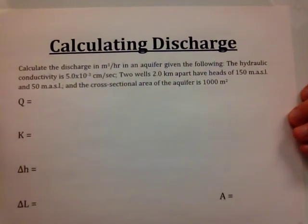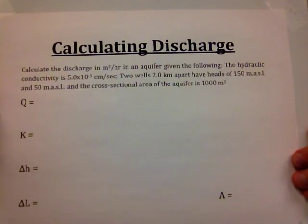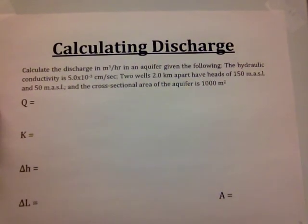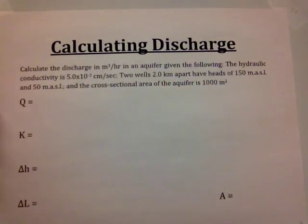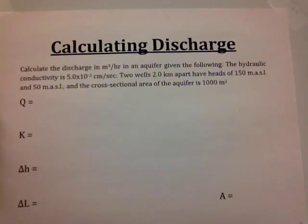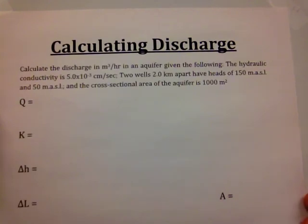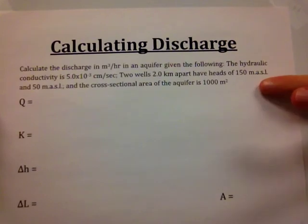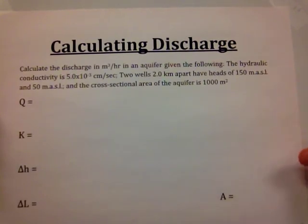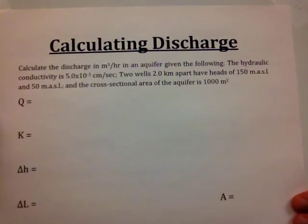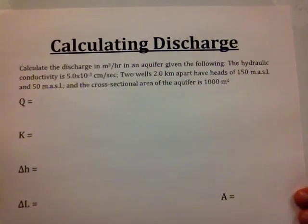Let's do a sample problem: calculate the discharge in cubic meters per hour in an aquifer given the following. The hydraulic conductivity is 5.0 times 10 to the minus third centimeters per second. Two wells two kilometers apart have heads of 150 meters above sea level and 50 meters above sea level, and the cross-sectional area of the aquifer is 1,000 square meters.